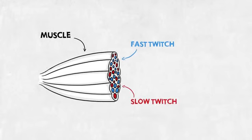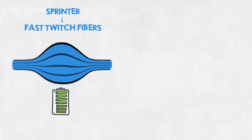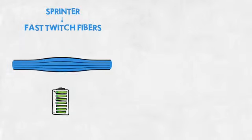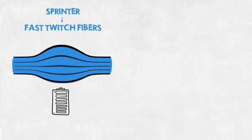A sprinter will primarily train his fast twitch fibers. These react instantly and work super fast, but quickly run out of power. When trained, fast twitch fibers naturally become big and heavy.